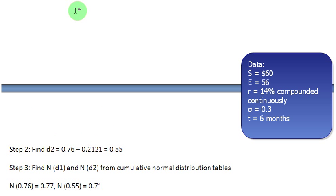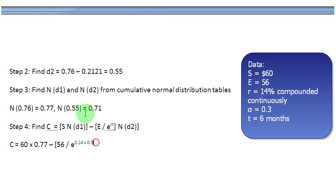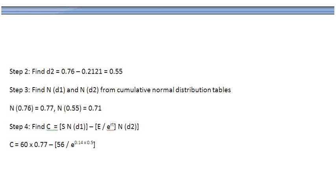And then what we are going to do is let me get rid of this superscript and then close the bracket. And then we have to multiply this thing by N of D2, which is equal to 0.71. So I write here 0.71.